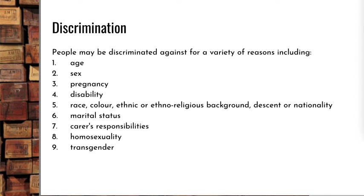The grounds you cannot discriminate against people for include: age, sex, pregnancy, disability, race, colour, religion, marital status, responsibility to look after children, and sexual orientation. You cannot discriminate based on any of those things — it doesn't matter.